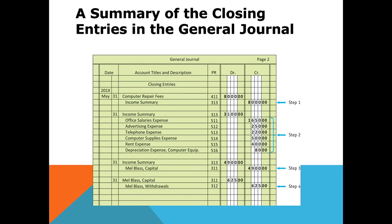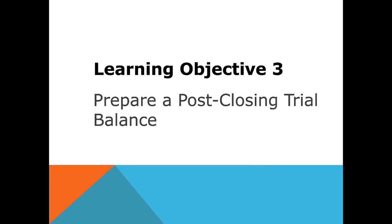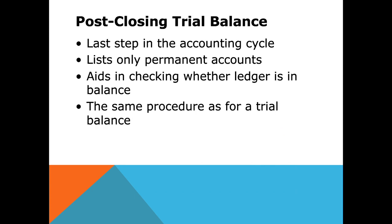This example closes on a monthly basis, but most companies don't — and even if they do, they would reverse it so that nominal accounts are permanently zeroed out at the end of the year. The last step is to prepare the post-closing trial balance, which is the last step of the accounting cycle. It lists only permanent accounts and aids in checking whether your ledger is in balance.